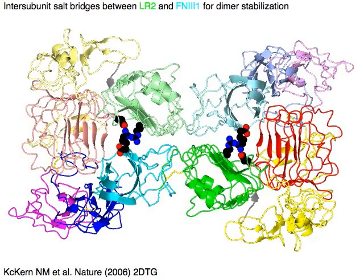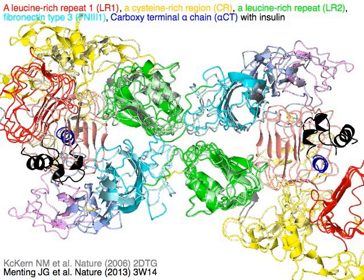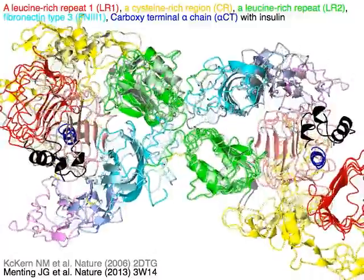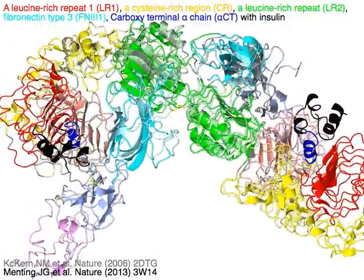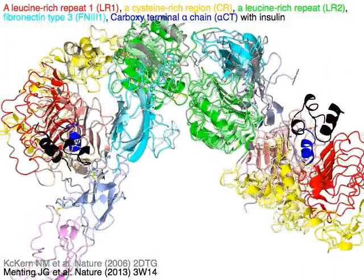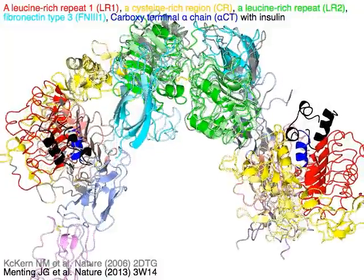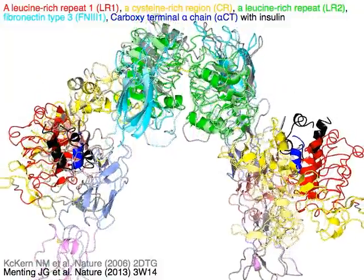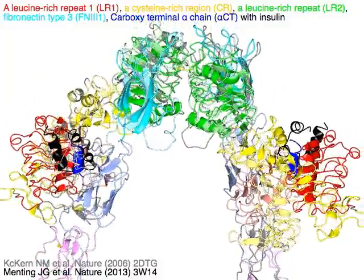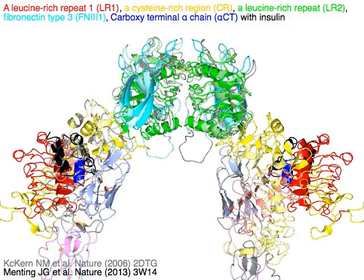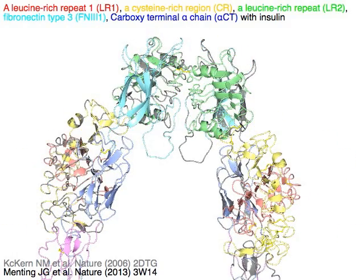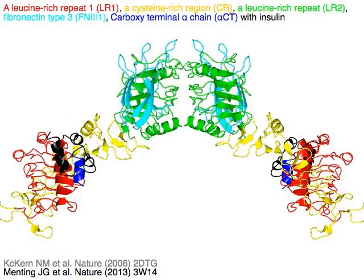In the insulin complex, the components are: a leucine-rich repeat LR1 in red, a cysteine-rich region CR in yellow, a second leucine-rich repeat LR2 in green, a fibronectin type 3 domain FN31 in cyan, fused to a carboxy-terminal alpha chain or alpha-CT from FN32 in green, the insertion domain in blue, and insulin in black.